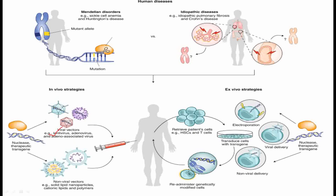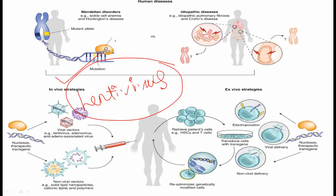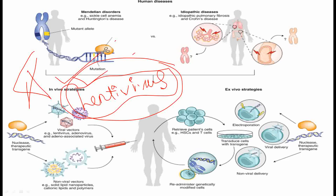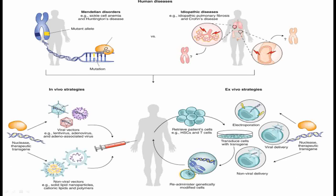Viral vectors used include lentivirus, which is the most important virus and most commonly used for delivery of any gene of interest in humans — a key point frequently asked in exams. Apart from lentivirus, adenovirus and adeno-associated viruses are also used. For non-viral vectors, solid lipid nanoparticles, cationic lipids, and polymers are used.